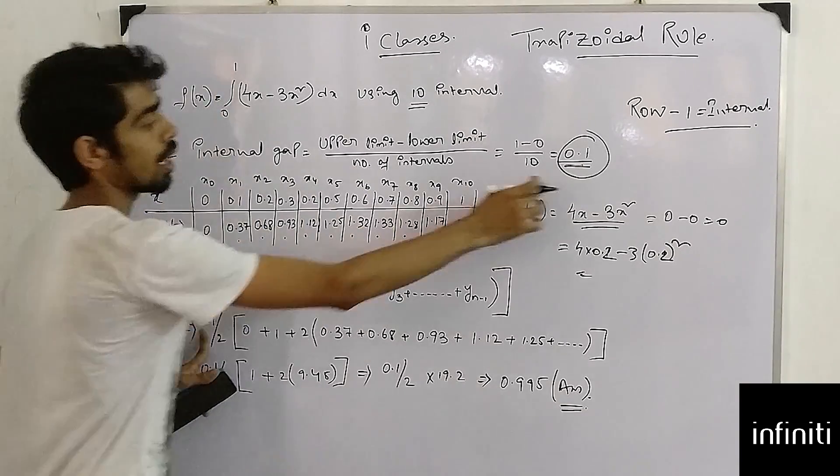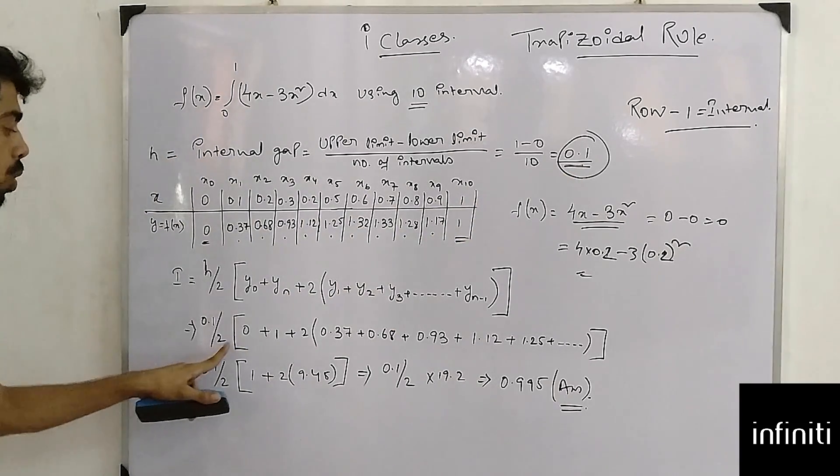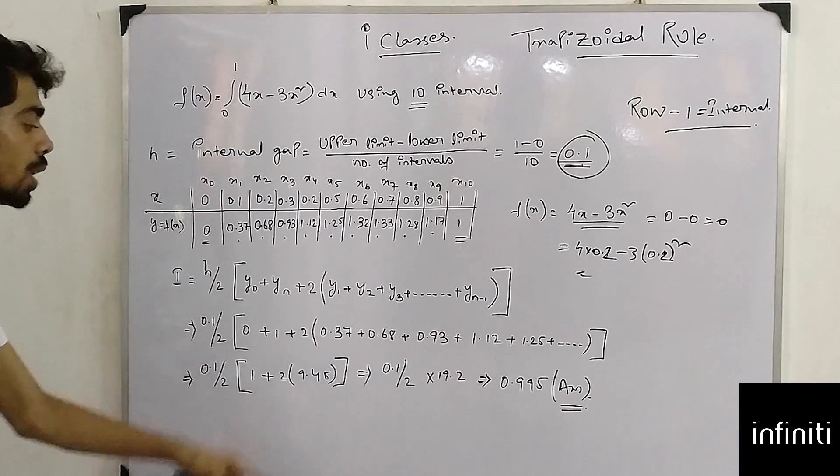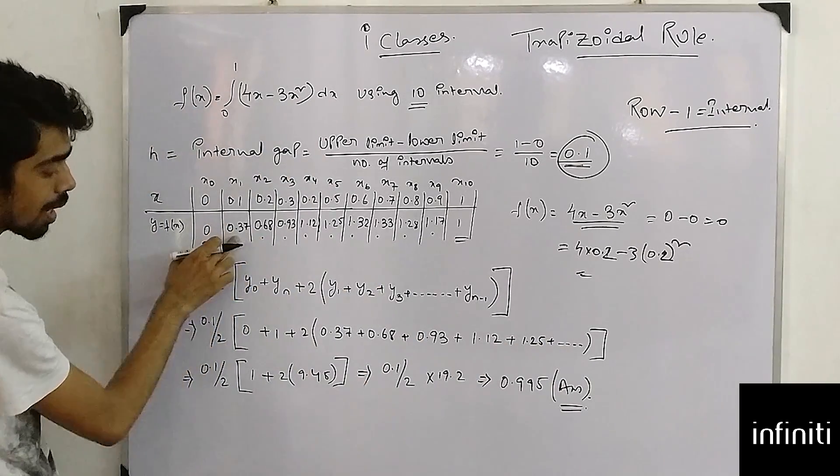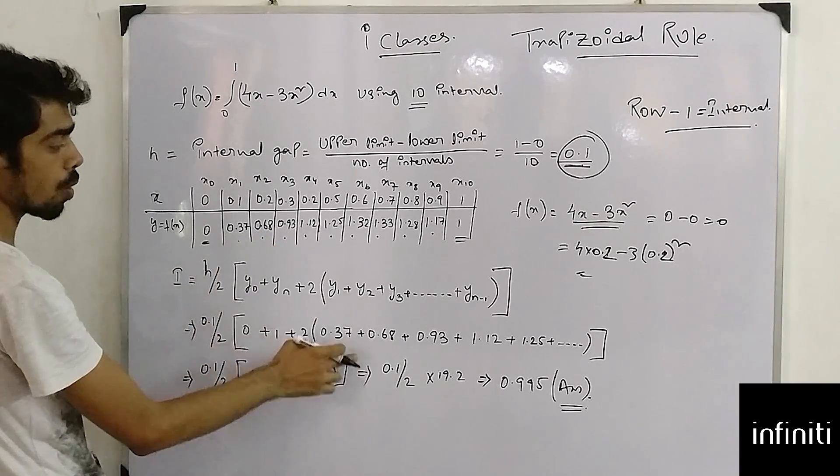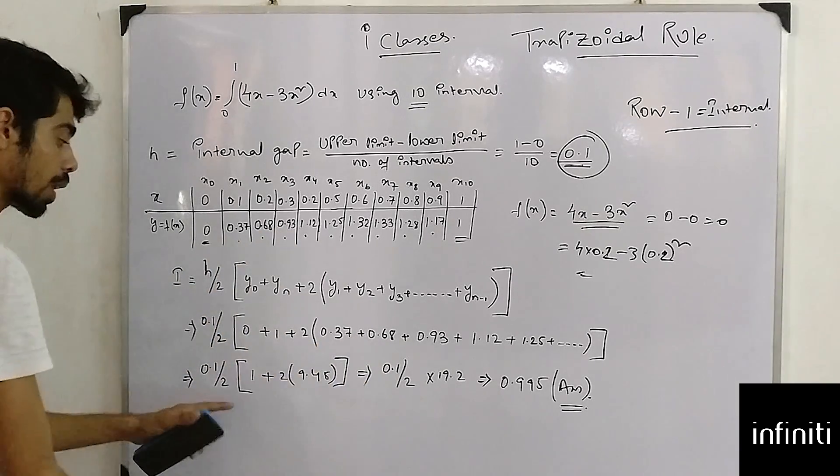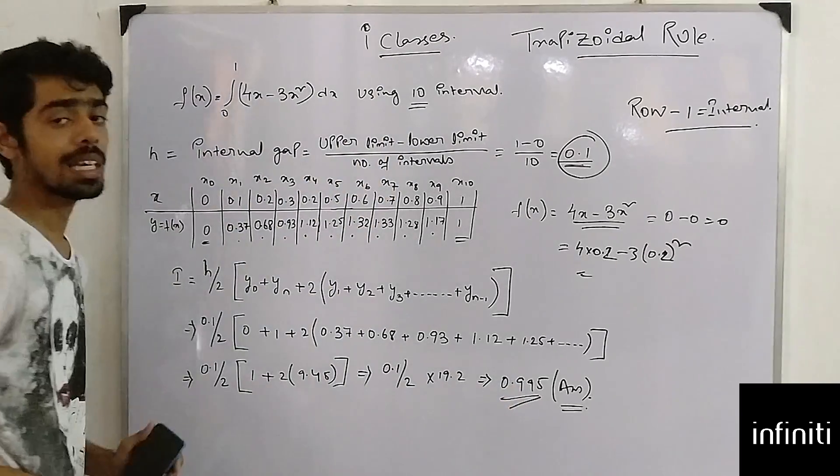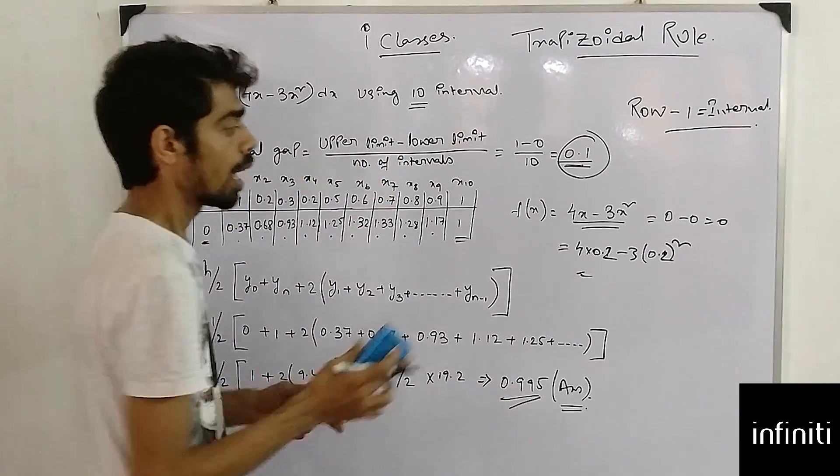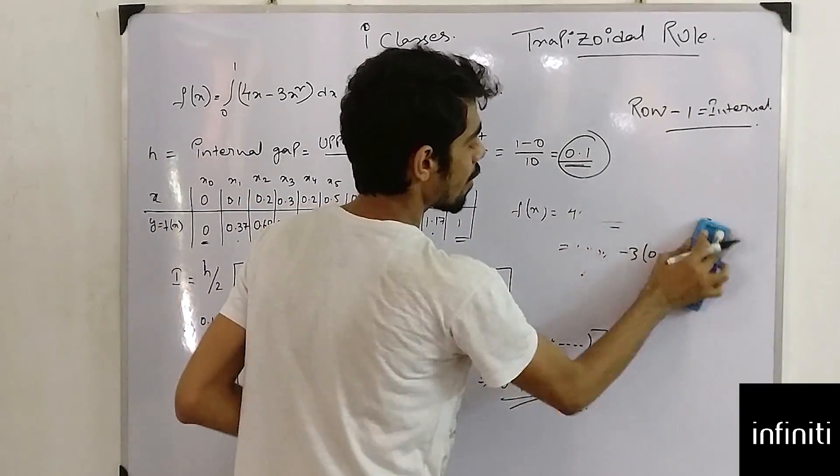I have just put my value over here. What is the value of x which is the internal gap? Internal gap is 0.1 divided by 2: 0 plus 1 plus 2 into the values getting from here: 0.37, 0.68, 0.93, 1.12. And then I have just calculated my value which is 0.995. If you want to check what is the value